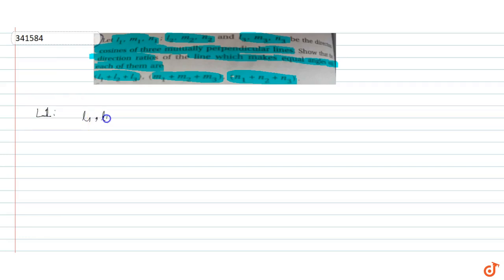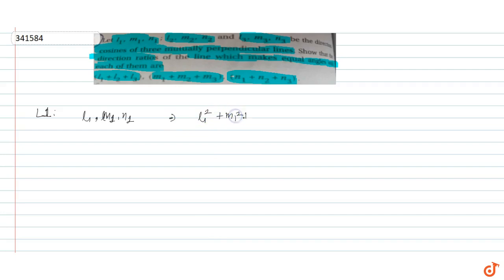If we consider line L1, this is the direction cosine of one line, so the direction cosine of one line is equal to one.